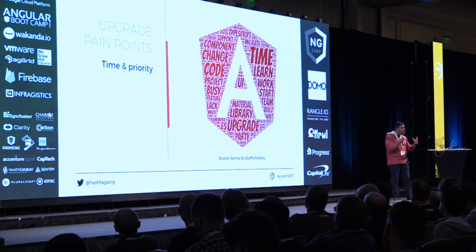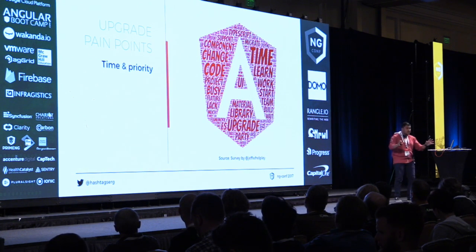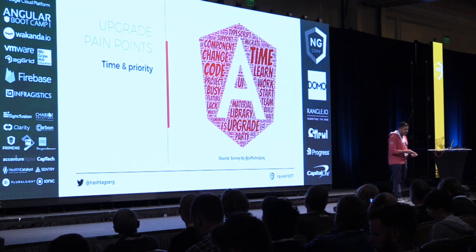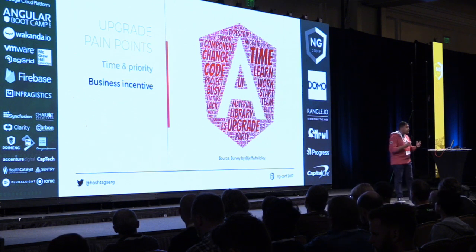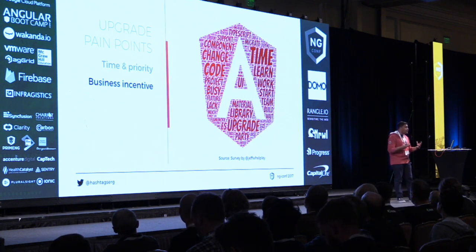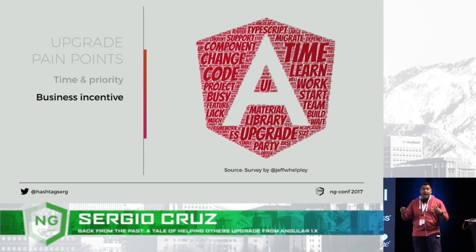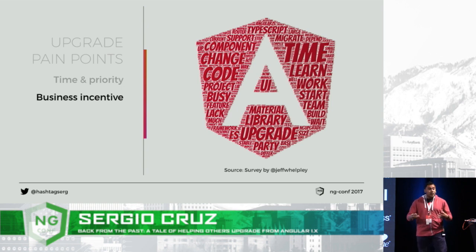Let's talk about those pain points in a little bit more detail. The first thing that came up a lot was time and priority. People couldn't afford to just stop what they were doing and start writing Angular in their code — they had to keep moving, they had to keep shipping features. And the next one is directly related: business incentive. A lot of businesses don't make more money just by writing with the latest and greatest tools. It's the real world — there's very little incentive to get going.